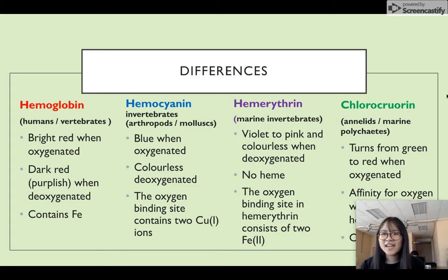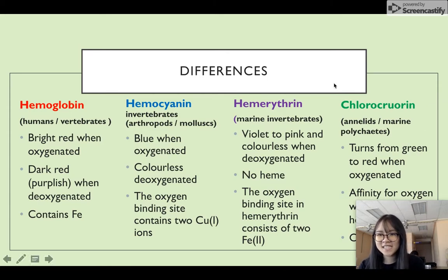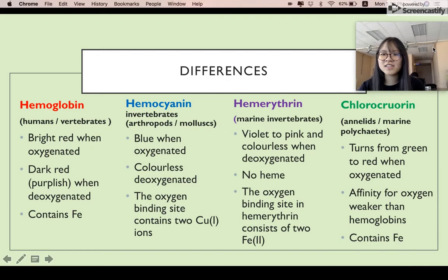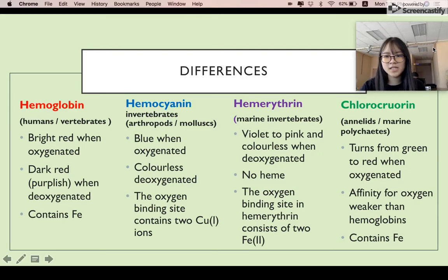Chlorocruorin is found in marine polychaetes. It turns from green to red when oxygenated. Its affinity for oxygen is weaker compared to hemoglobin, and it also contains iron.